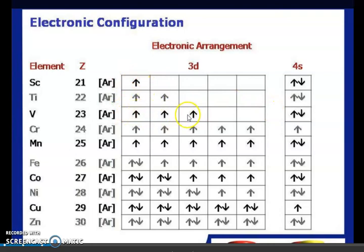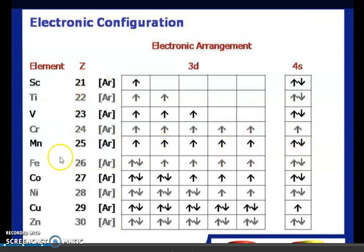Chromium would be expected to be 4S² 3D⁴, but this is an exceptional case. It becomes 4S¹ 3D⁵ — we studied this in Class 11 as well. Similarly, Copper is also exceptional: its configuration is 3D¹⁰ 4S¹. So remember these configurations carefully.